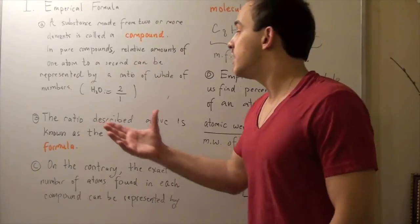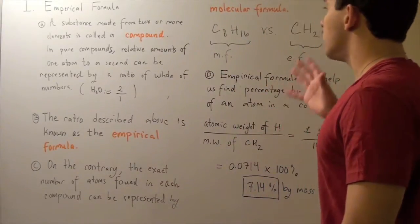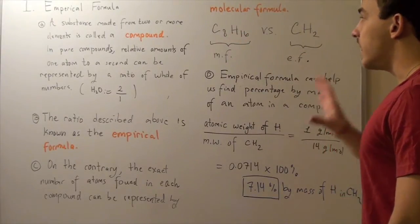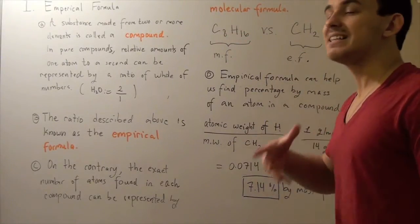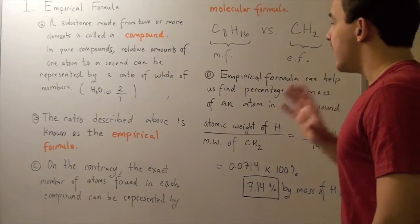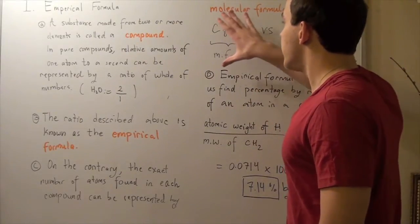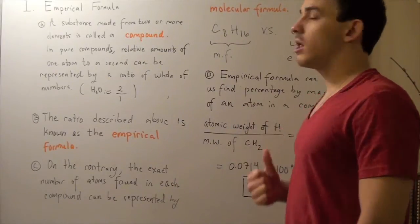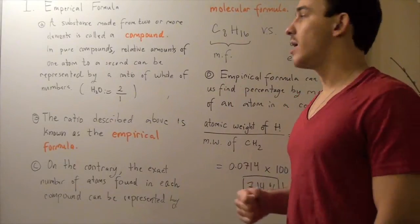Other times, these two guys will differ. For example, suppose we look at the hydrocarbon C8H16. The molecular formula gives you the exact amount of atoms. In other words, this is our molecular formula. In this hydrocarbon, there are eight C molecules, carbon molecules, and 16 H molecules.